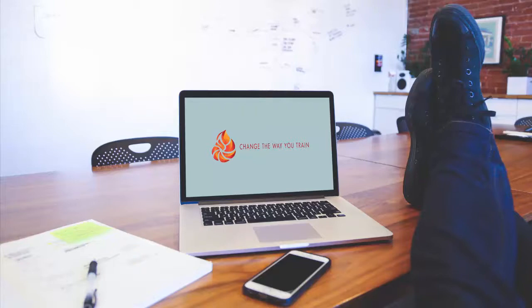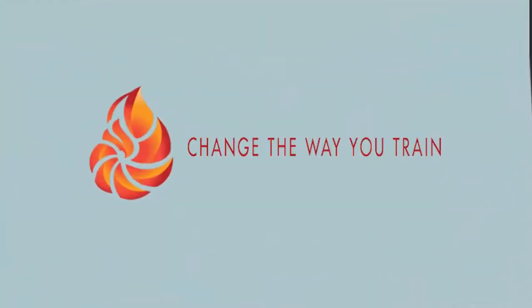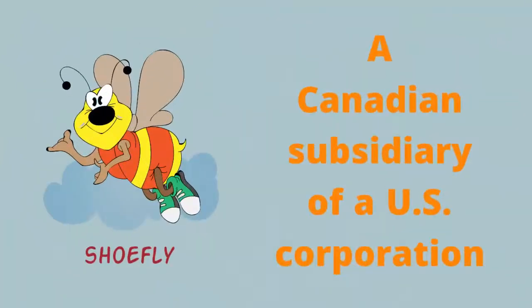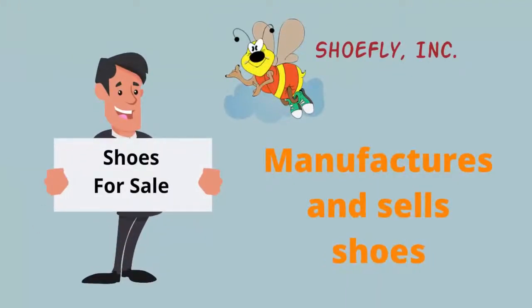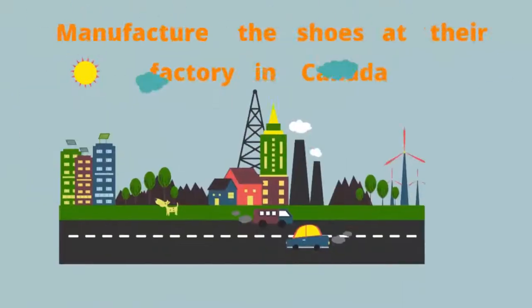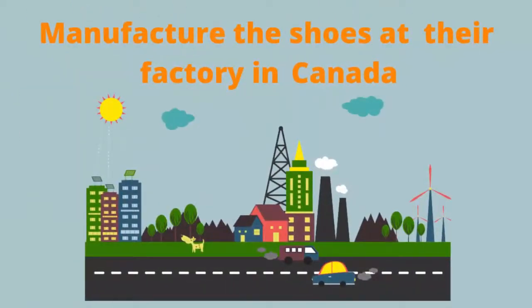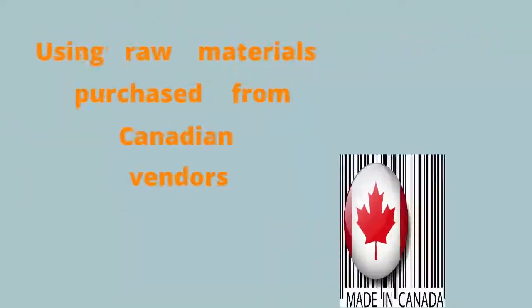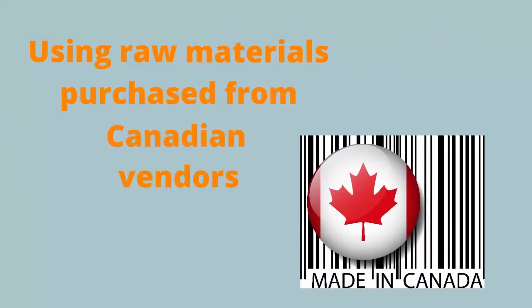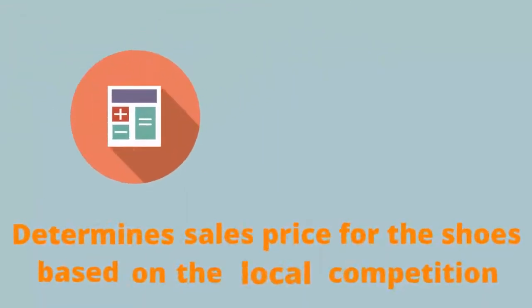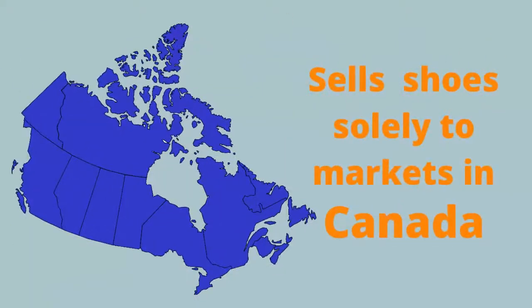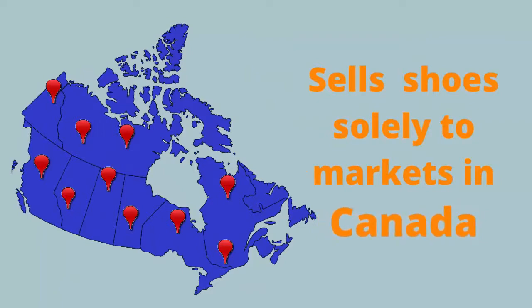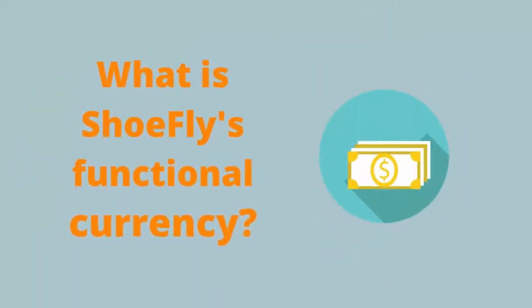Let's take a look at an example. ShoeFly is a Canadian subsidiary of a U.S. corporation. ShoeFly manufactures and sells shoes. They manufacture the shoes at their factory in Canada using raw materials that are purchased from Canadian vendors. ShoeFly determines the sales price for the shoes based on the local competition and sells their shoes solely to markets throughout Canada. What is ShoeFly's functional currency?